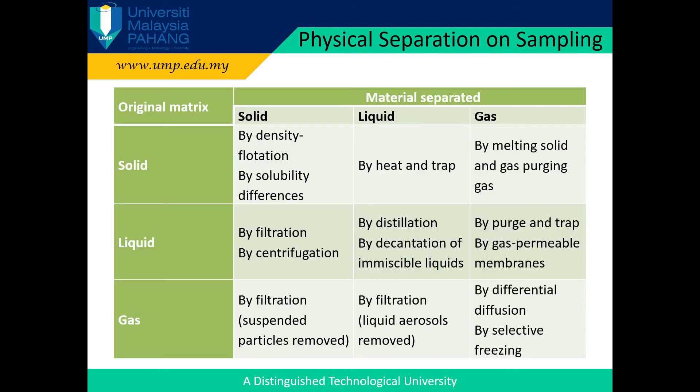The analyte of interest could be part of a complex heterogeneous mixture. Therefore, it is often necessary to employ physical separation methods to effectively separate the analyte for further analysis. Several physical separation methods are given in this table. For example, separation of a liquid analyte from a solid matrix can be carried out by heat and trap, while separation of a liquid analyte from a liquid can be affected by distillation, or by decantation if the liquids are immiscible.